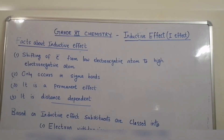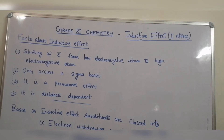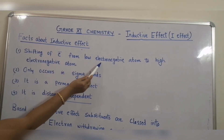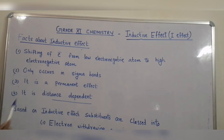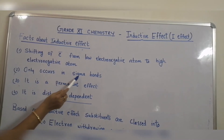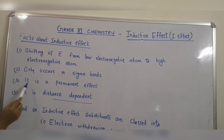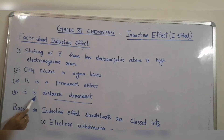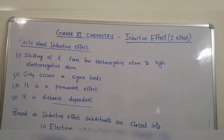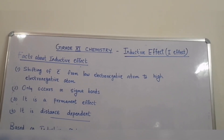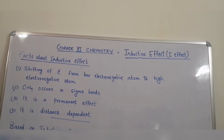Let us see facts about inductive effect. Number one: shifting of electrons from a low electronegative atom to a high electronegative atom. Number two: inductive effect occurs in sigma bonds only. Number three: it is a permanent effect. Number four: it is distance dependent — inductive effect decreases as the number of bonds increases and becomes vanishingly small after four bonds.